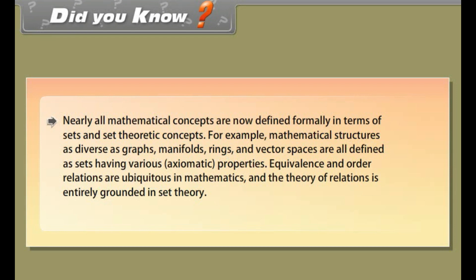manifolds, rings, and vector spaces are all defined as sets having various axiomatic properties. Equivalence and order relations are ubiquitous in mathematics, and the theory of relations is entirely grounded in set theory.